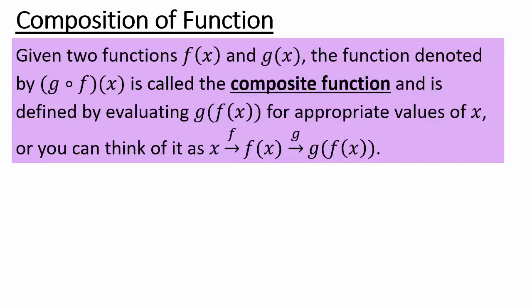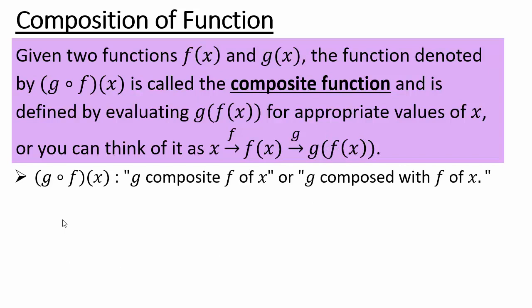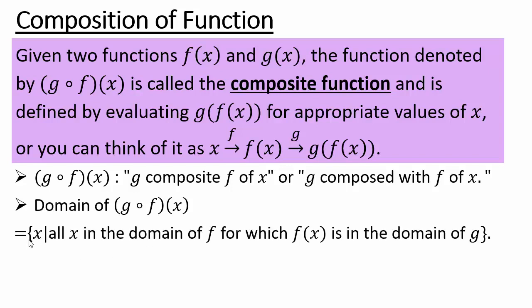Composition of functions is a different kind of arithmetic you do with functions. You have two functions f and g, and the composite function g∘f is defined by evaluating f of x first and putting that result into g — that is, g of f of x — for appropriate values of x. You can draw a diagram: start with x, f applies first giving f of x, then g applies giving g of f of x. The domain of g∘f is the set of all x in the domain of f for which f of x is in the domain of g.